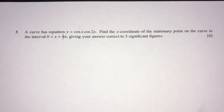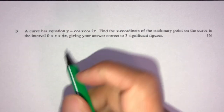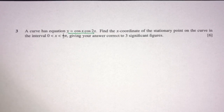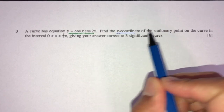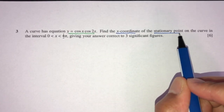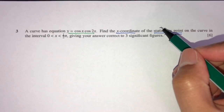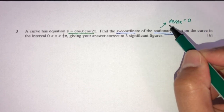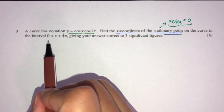Now let's move on to question number 3. Here we have a curve with a trigonometric equation. We have to find the x-coordinate of the stationary point. So what can we think of right away? We should know that at the stationary point, dy/dx is equal to 0. So once you know this, we have to use this information to find what we need on the curve.